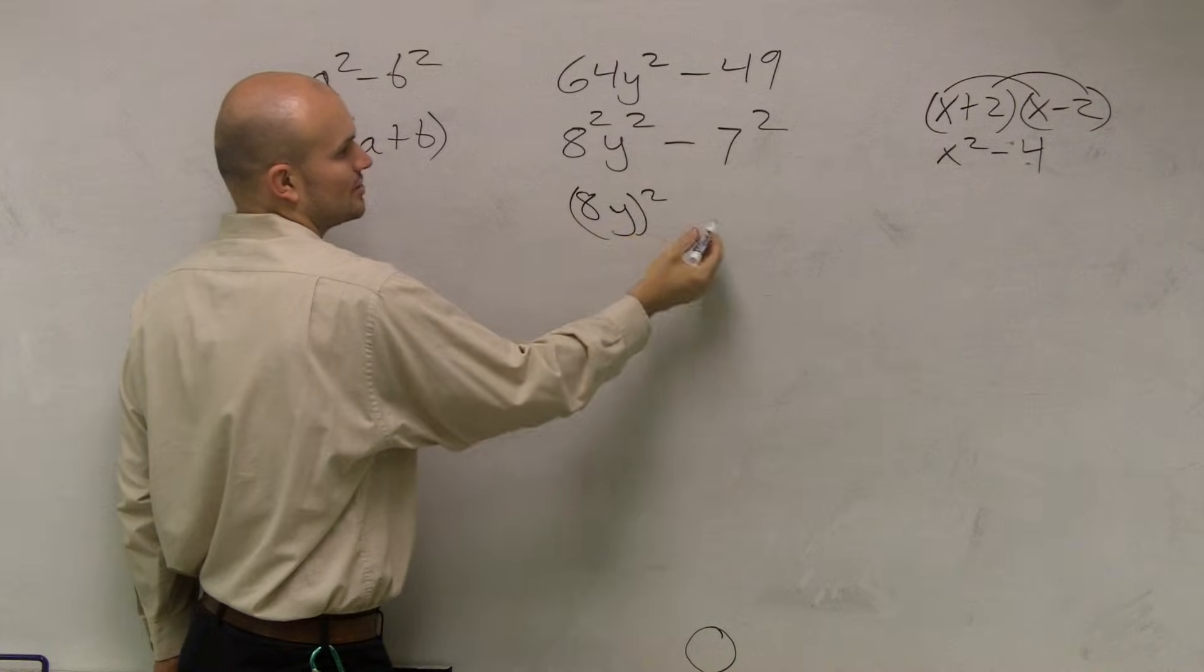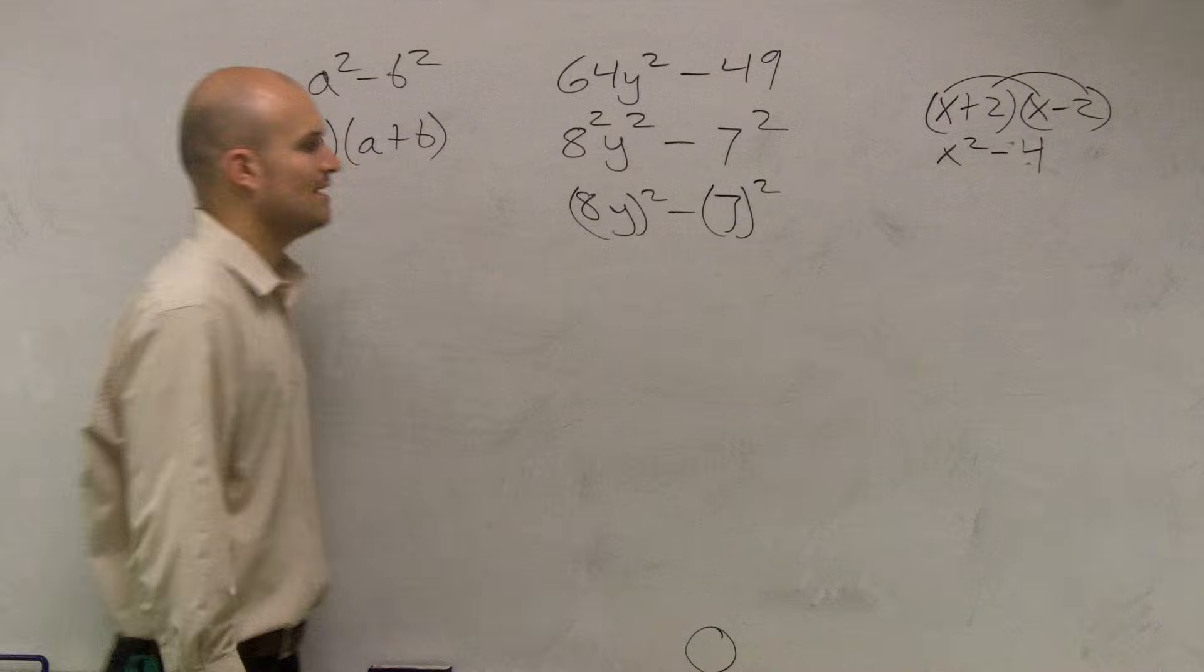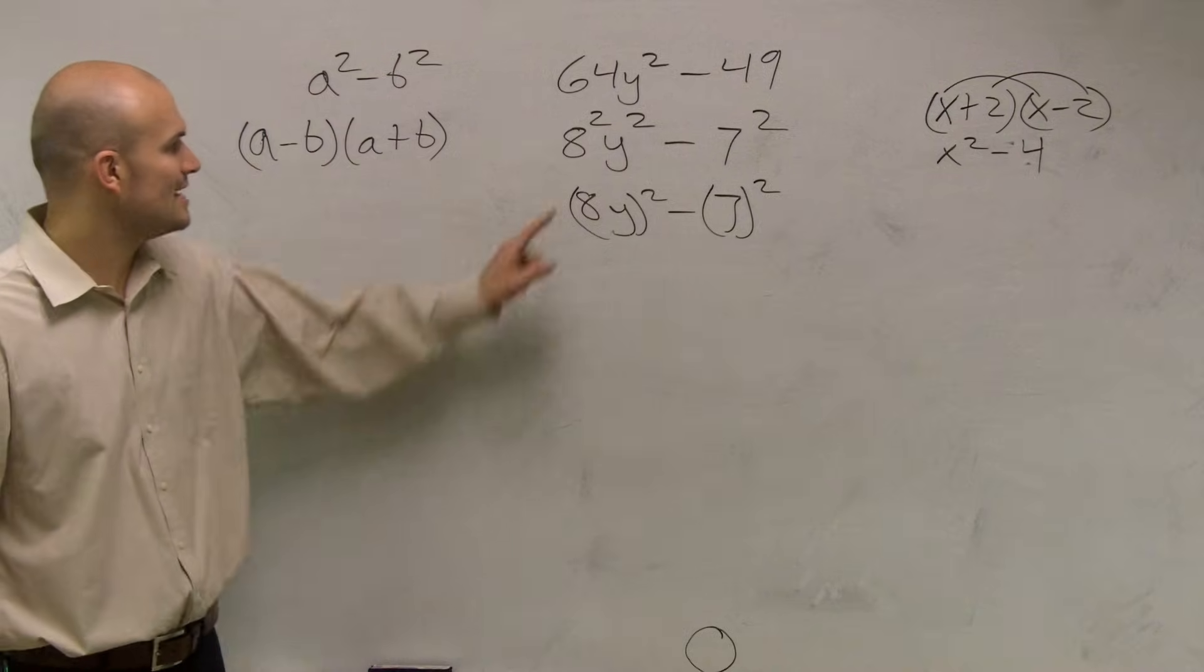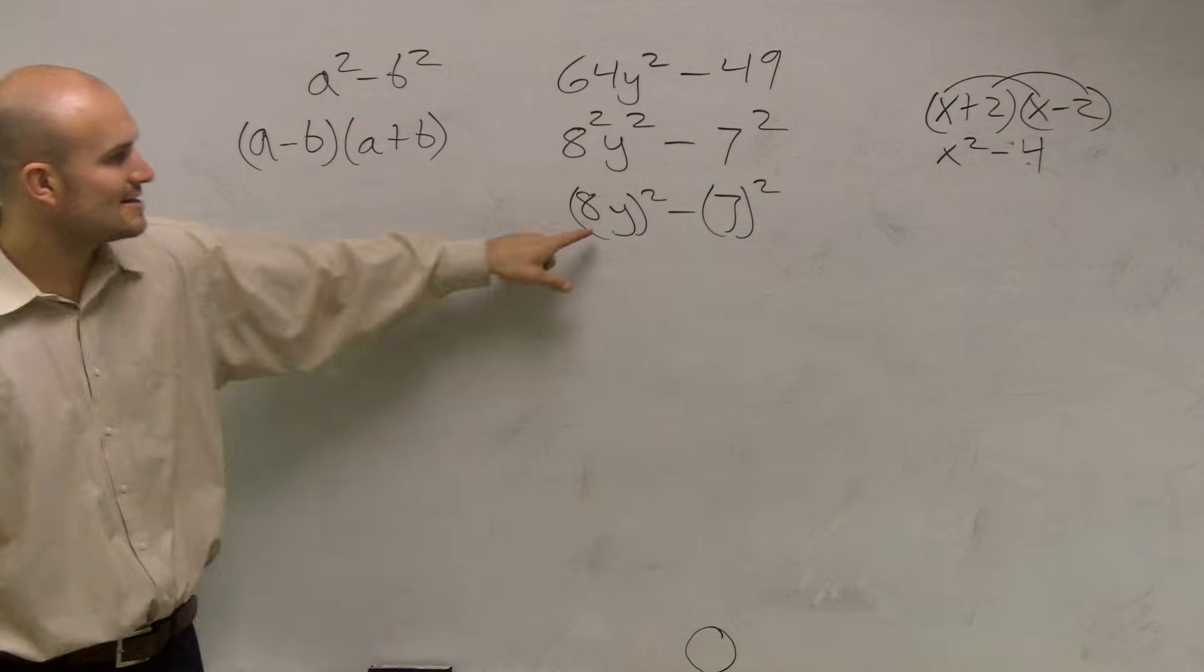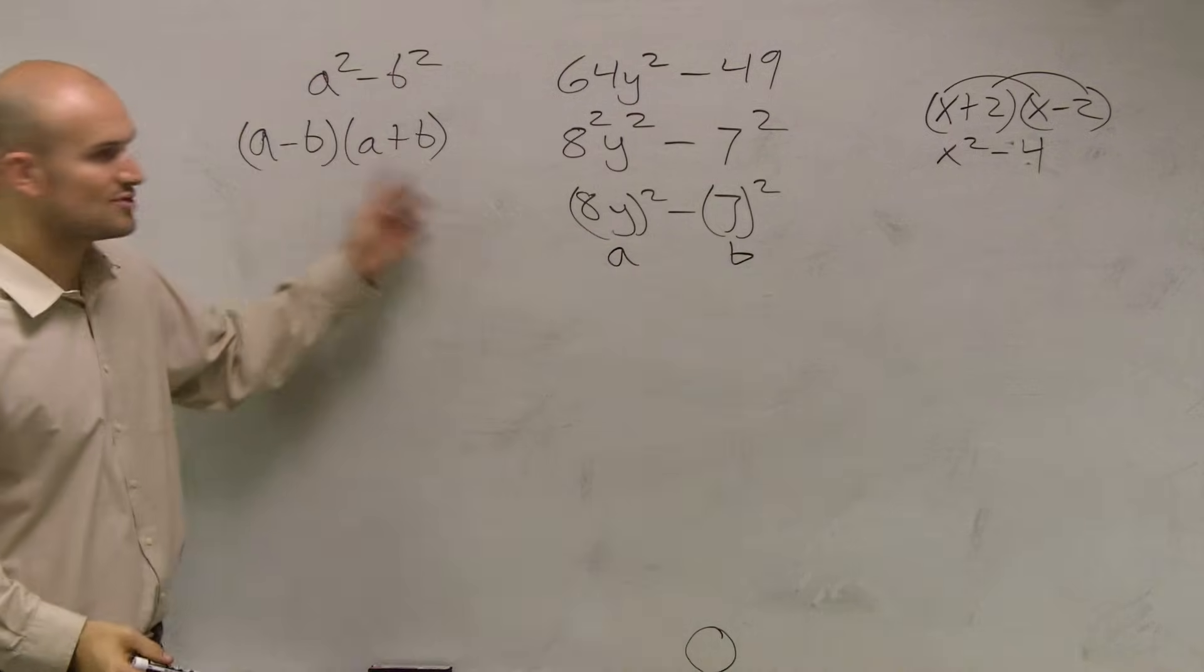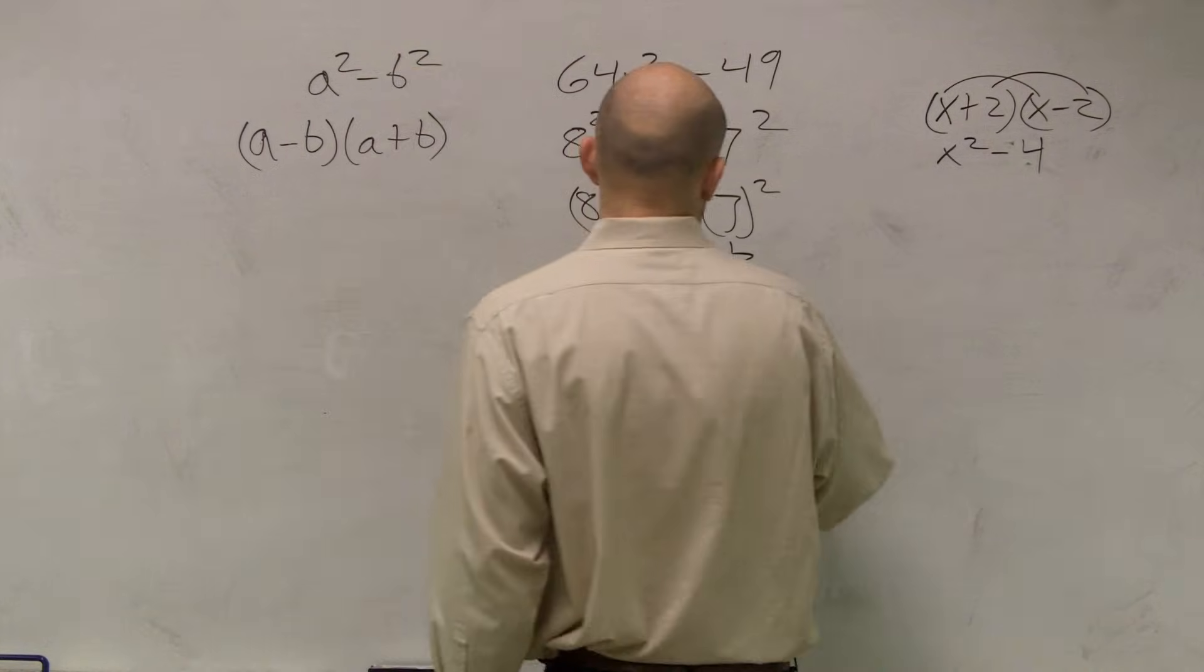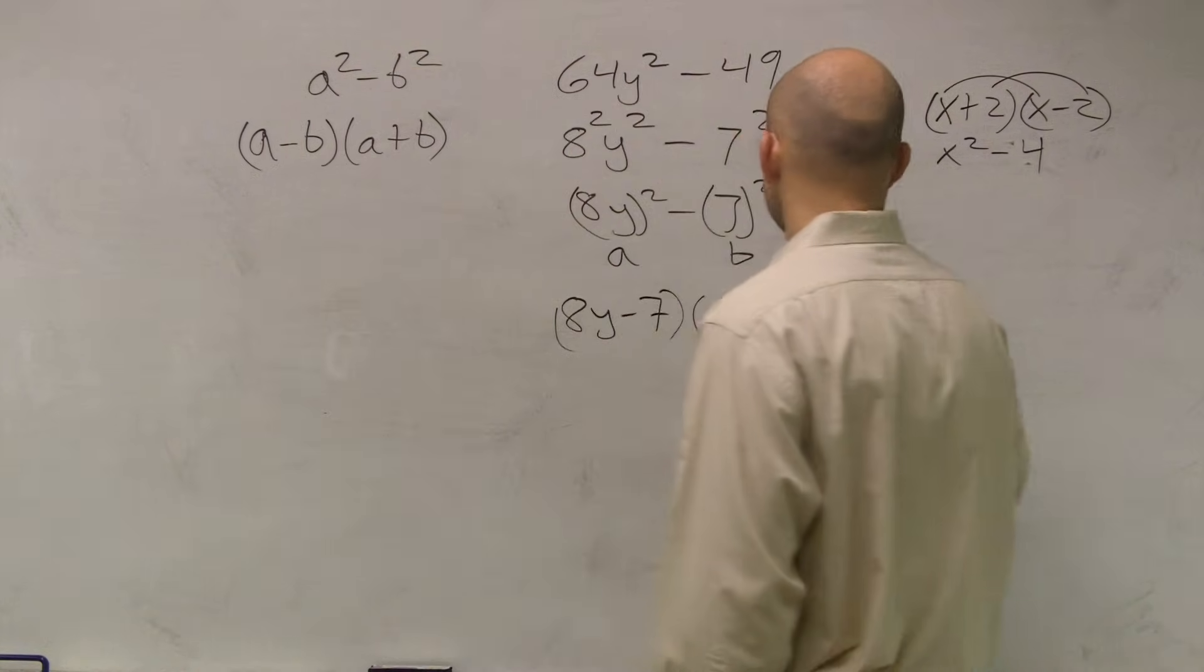So I have 8y squared minus 7 squared. Now you can see what to do. I can say this is my a, and this is my b. So just write them as your two binomials: 8y minus 7 times 8y plus 7.